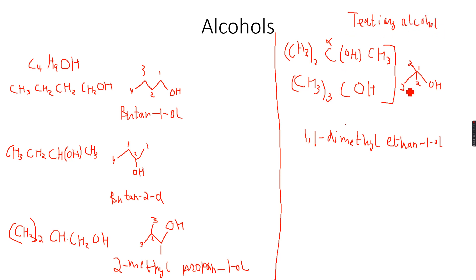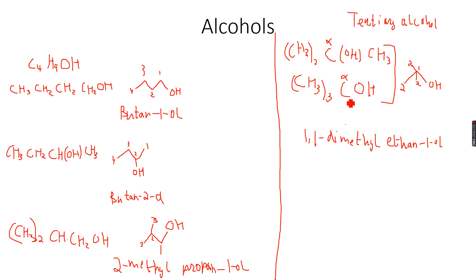This alcohol is called a tertiary alcohol because the alcohol group is attached to the first carbon atom — this is the alpha carbon atom. The alpha carbon atom is attached to three carbon atoms, because you can see three C groups, three carbons. So since the alpha carbon atom is attached to three carbon atoms, this is a tertiary alcohol.